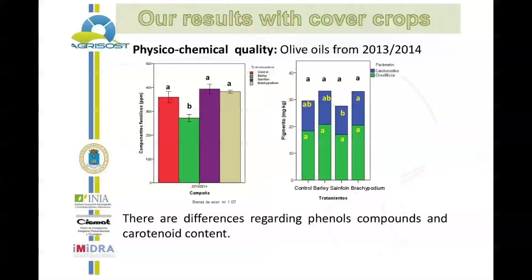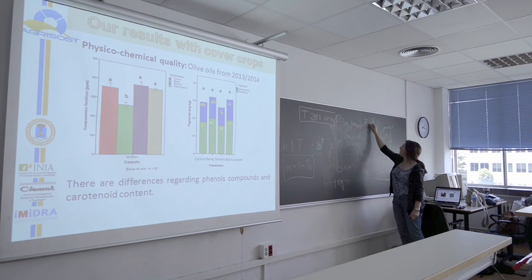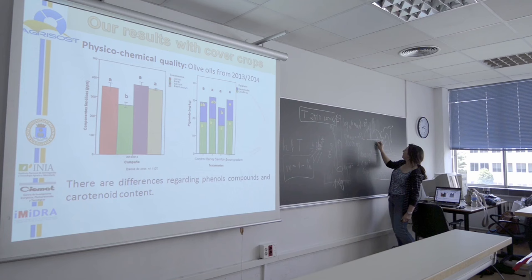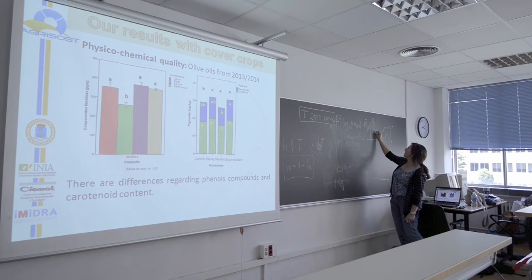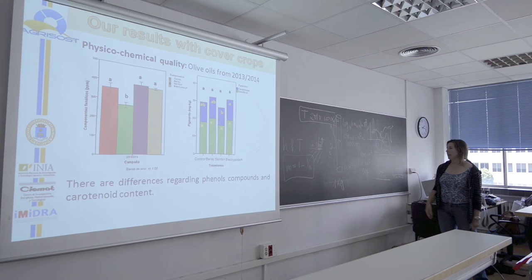We found differences in polyphenol content. Barley had less of these compounds in the oil, but this was because the maturity index of barley was lower than the others. The polyphenol content peaks at around maturity index 3.5. We had some pest issues in this area. Barley was positioned around that peak, so it had less polyphenols than the rest, because the rest were at a slightly higher maturity index — which was enough to make the differences.